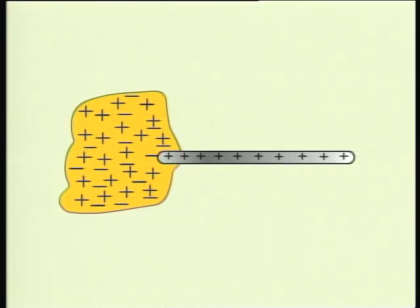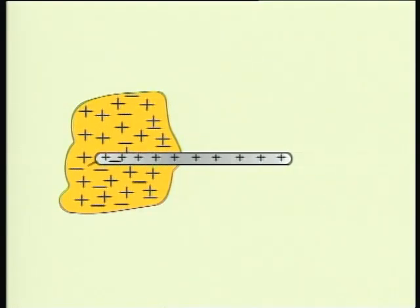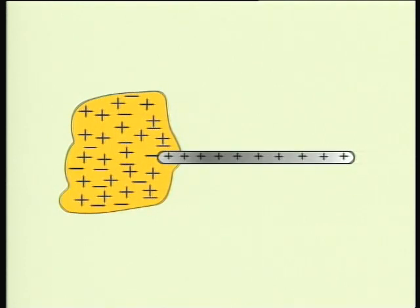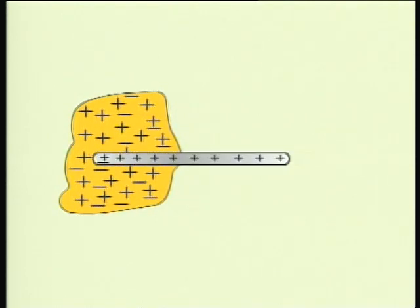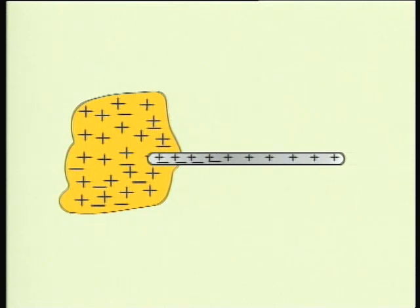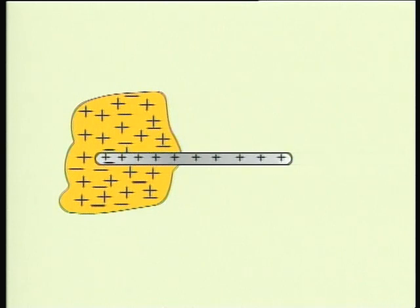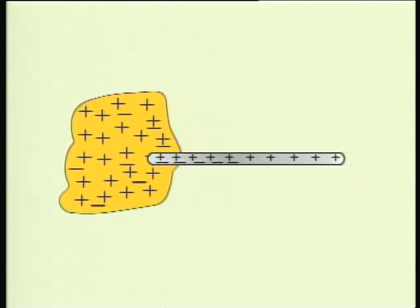For example, when we rub a glass rod with a piece of silk, only an integral number of electrons can be transferred from the glass rod to the silk. No fraction of electric charge has ever been observed.